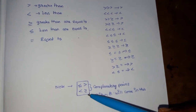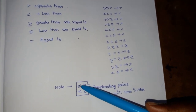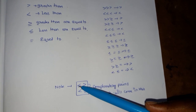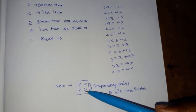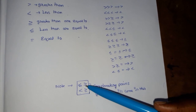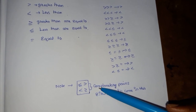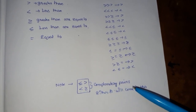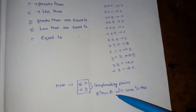Here we have a note. If we have variables with less than or equal to and greater than, or less than and greater than or equal to — that is, opposite symbols — this is the rule to follow.